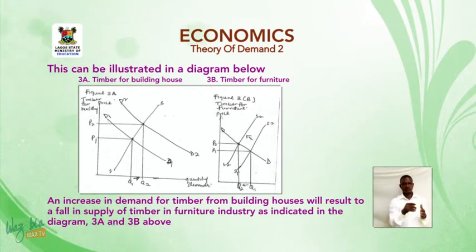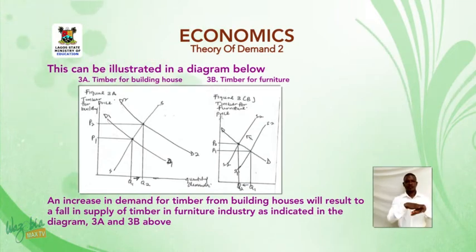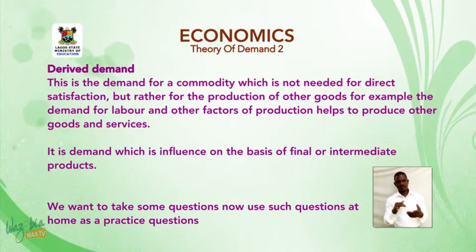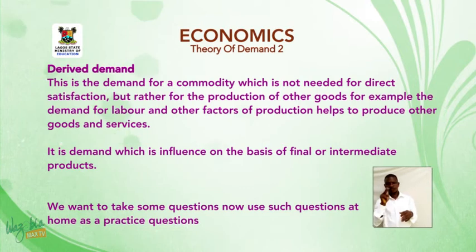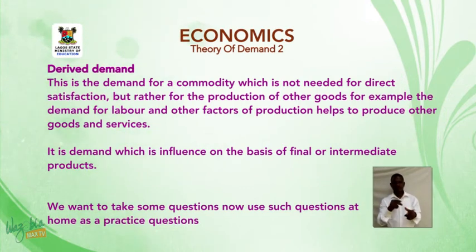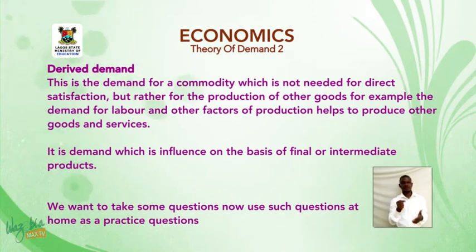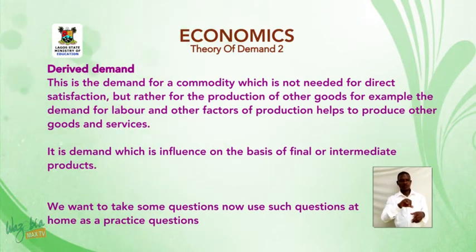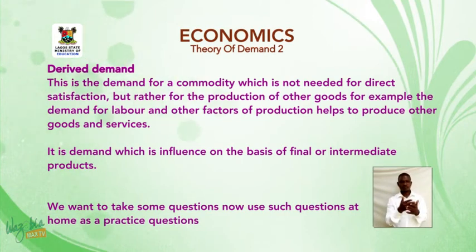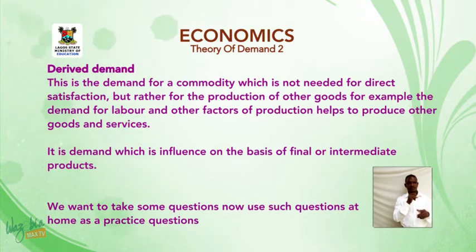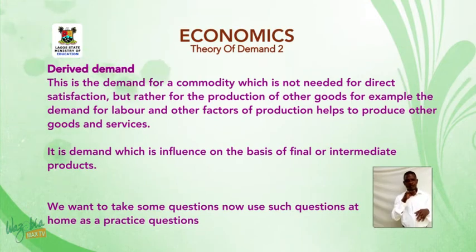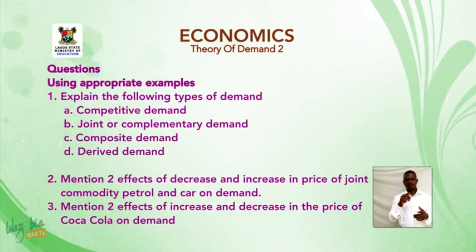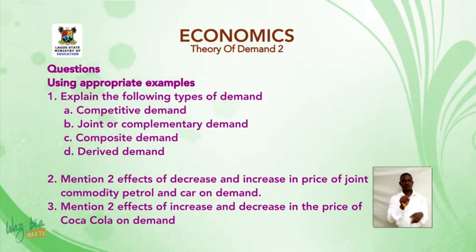Derived demand is the demand for a commodity which is not needed for direct satisfaction but rather for the production of other goods. For example, the demand for labour and other factors of production helps to produce other goods and services. It is a demand which is influenced on the basis of final or intermediate products.